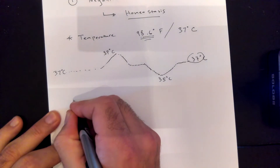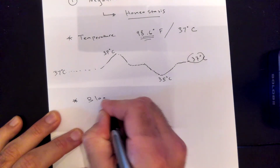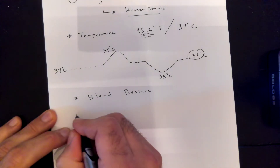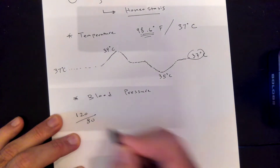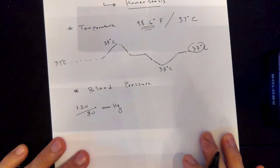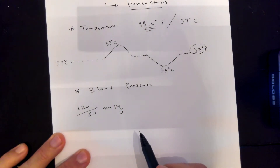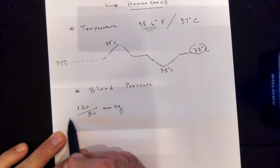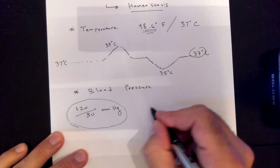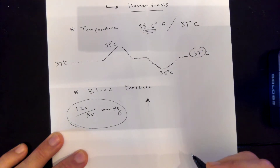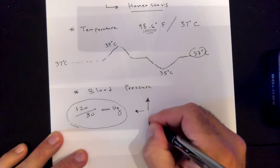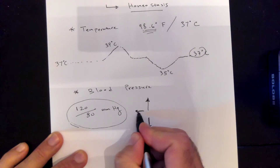Another example is blood pressure. With blood pressure, we typically think of 120 over 80 millimeters of mercury. That's the number you may be familiar with from the doctor's office when they check your blood pressure — this is the average. If that pressure goes too high, that can be dangerous, and if it goes too low, that can also be dangerous. Your body always tries to return to 120 over 80.